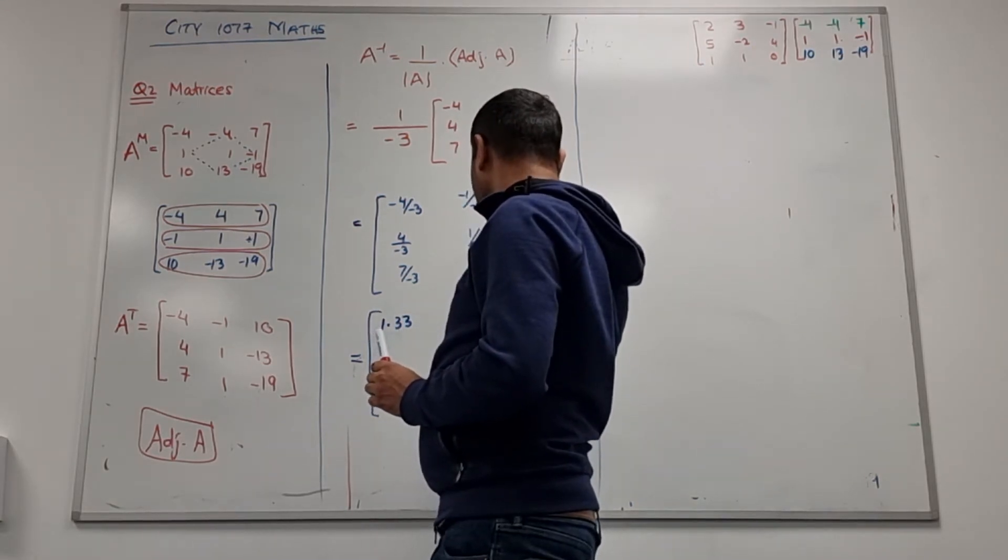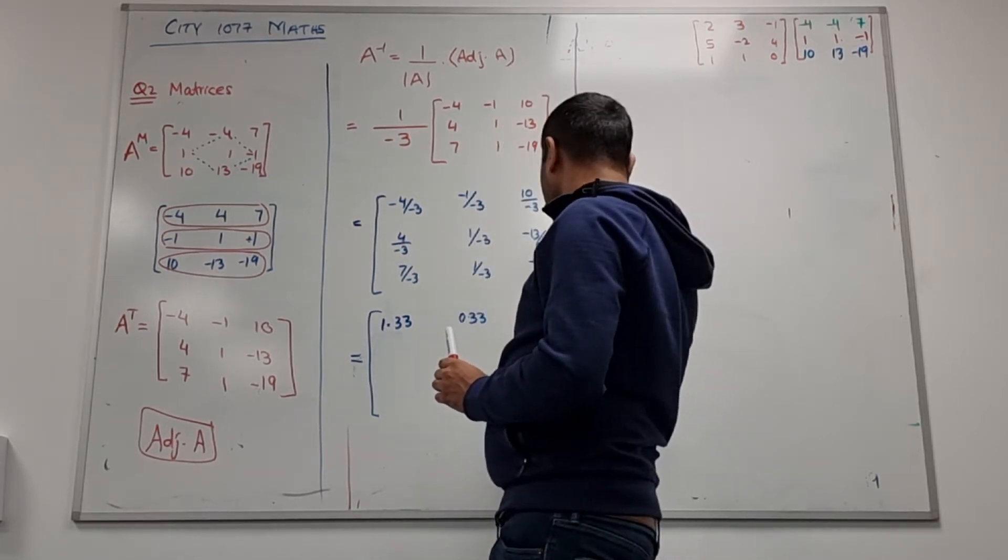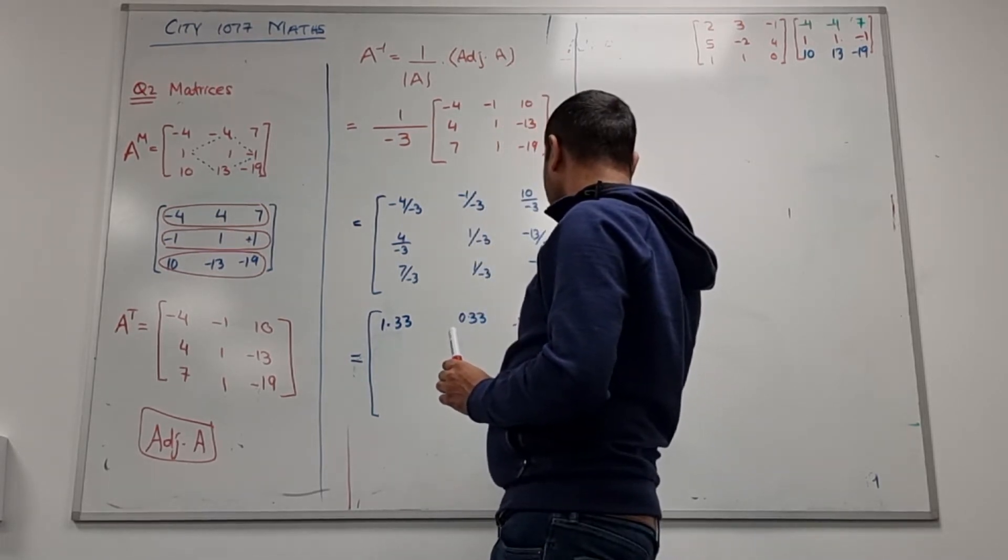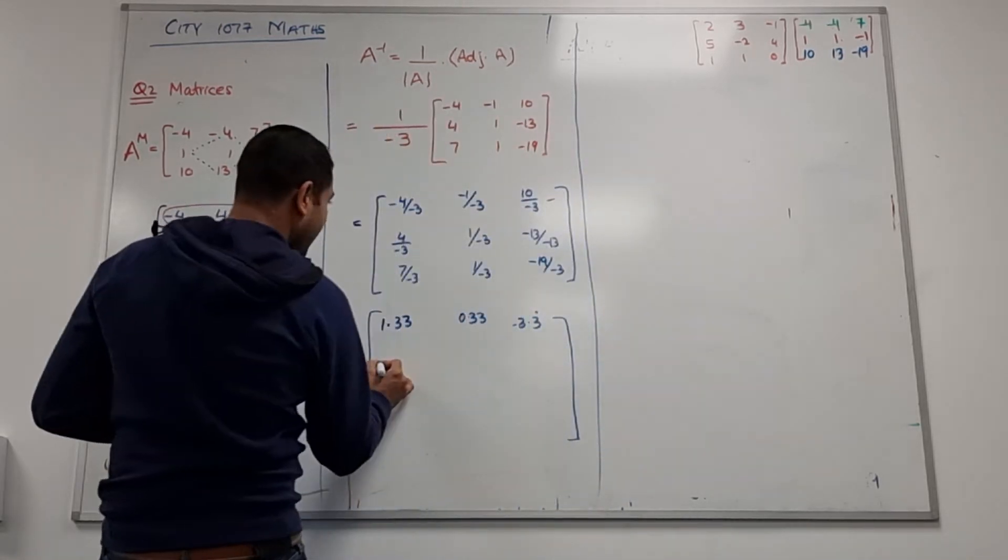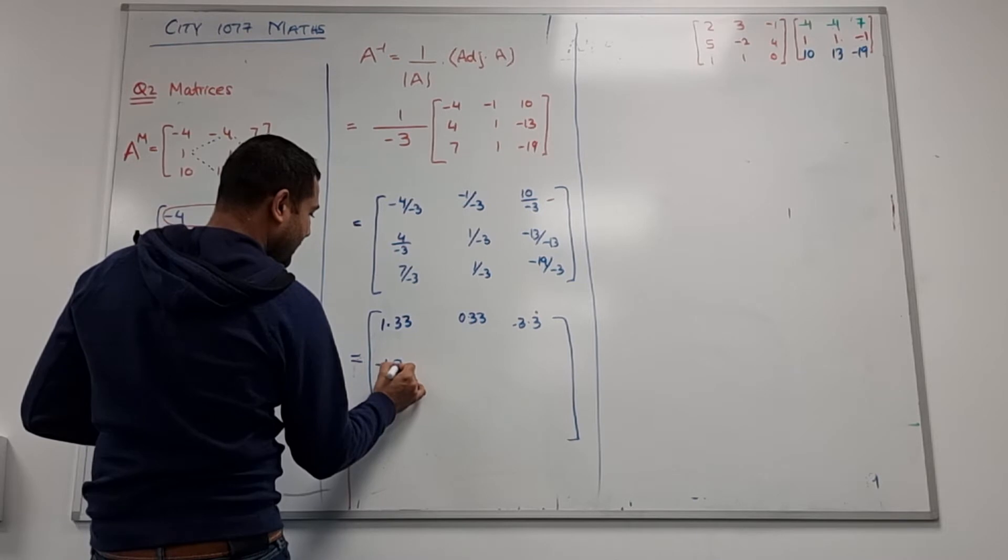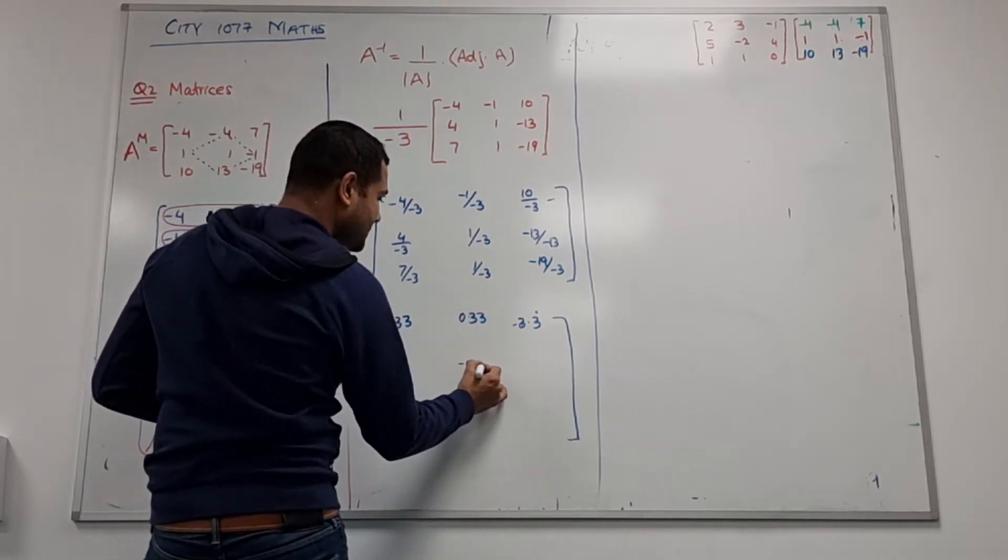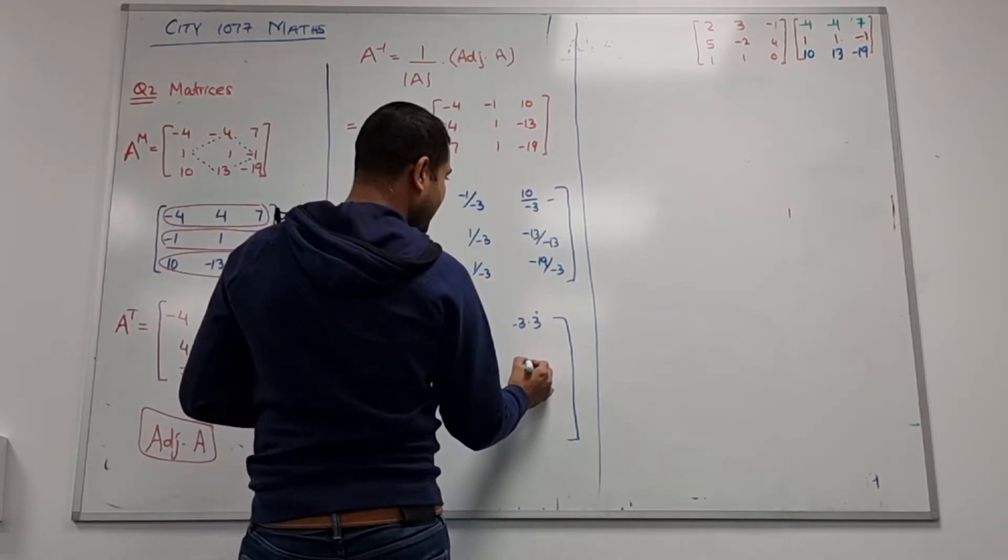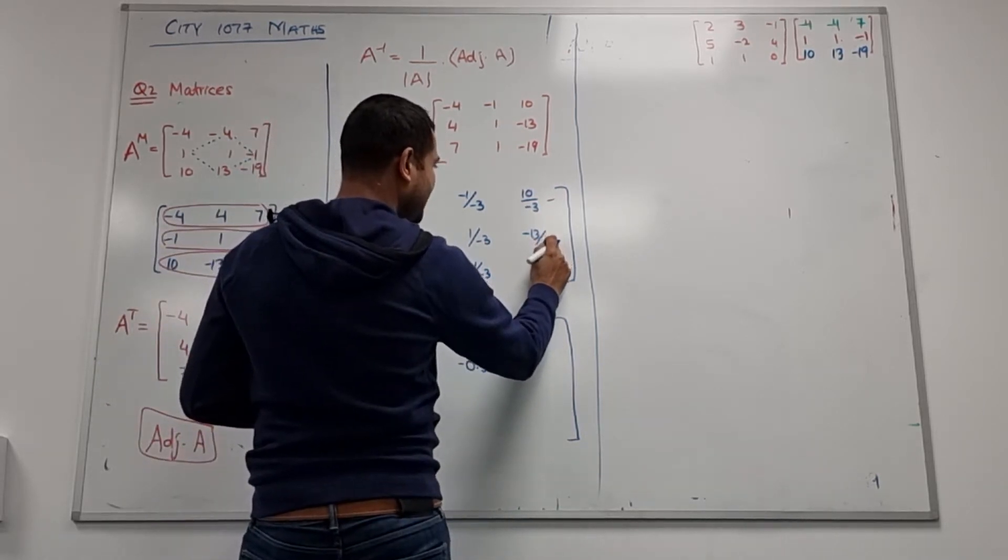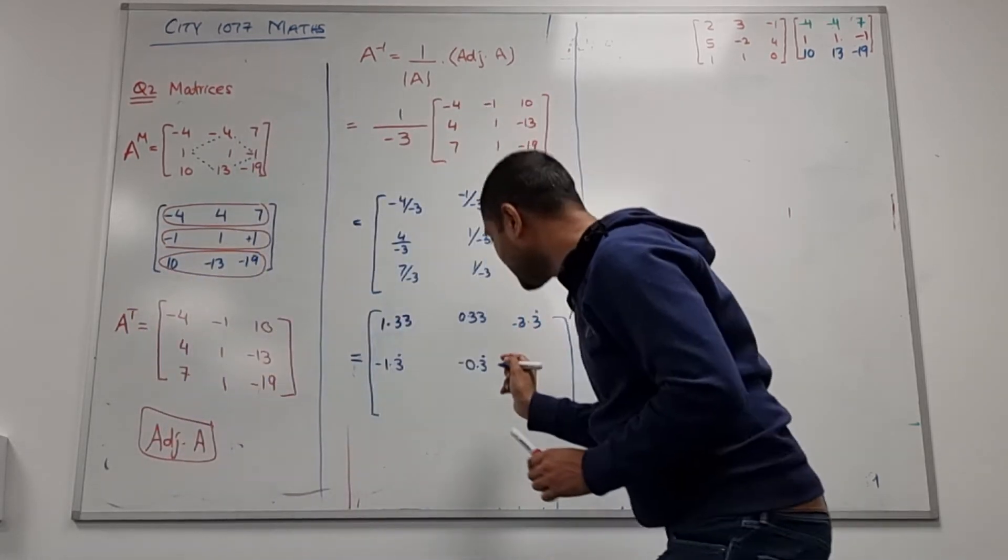So 4 over 3, anyone can convert that in decimal please with a calculator? 1.33, okay. That's 0.33. 10 over minus 3, that's minus 3.33 recurring. That will be minus 1.33 recurring. That's still minus 0.33 recurring. That's my mistake, it's 13 over 3, what's the answer?